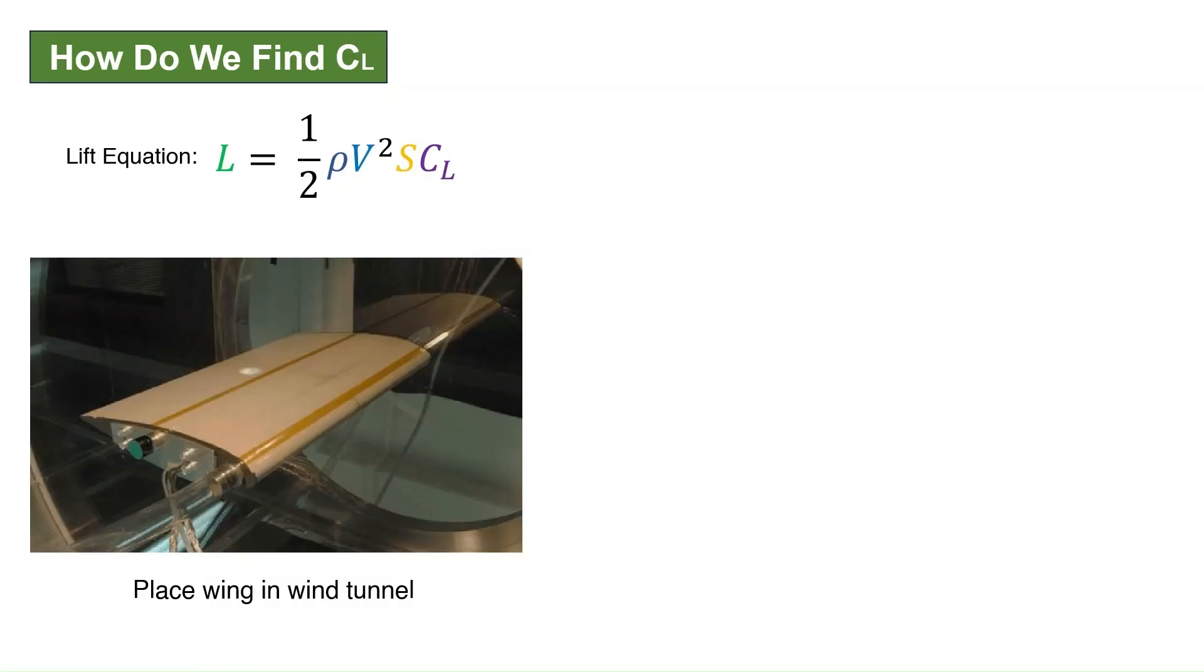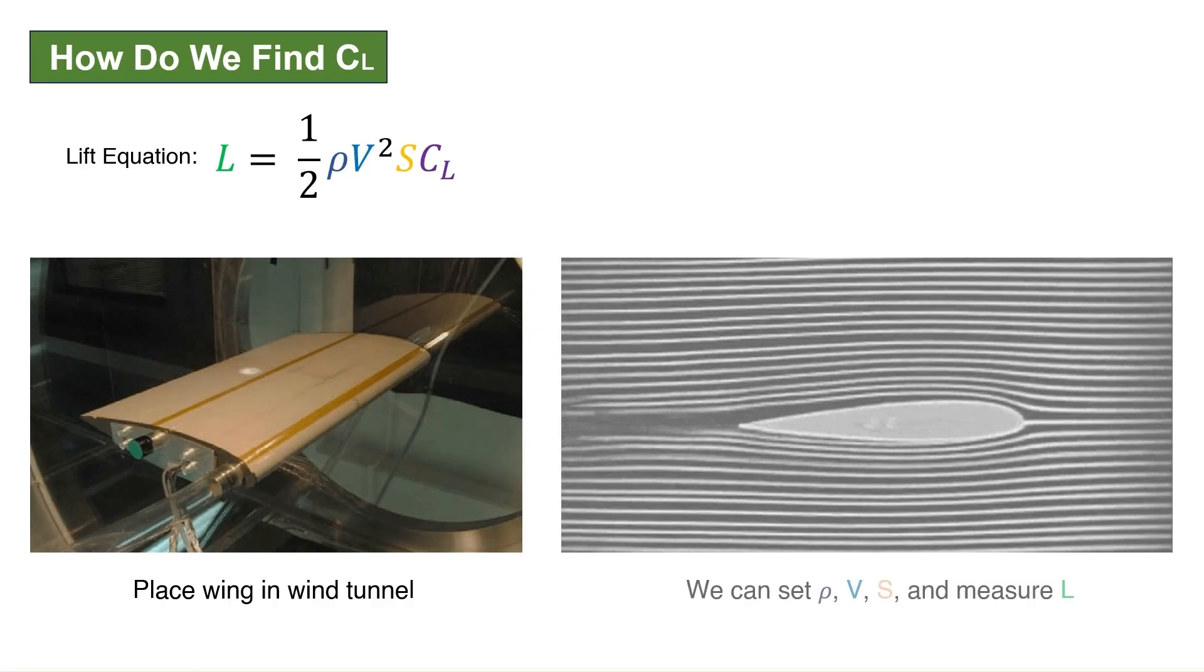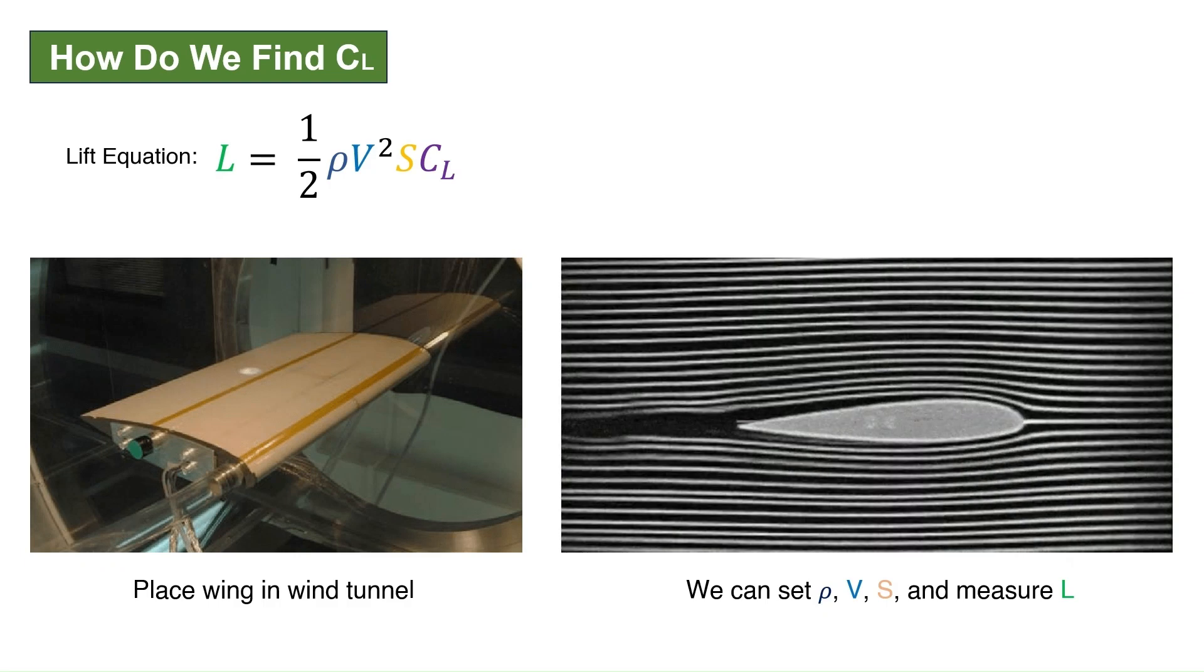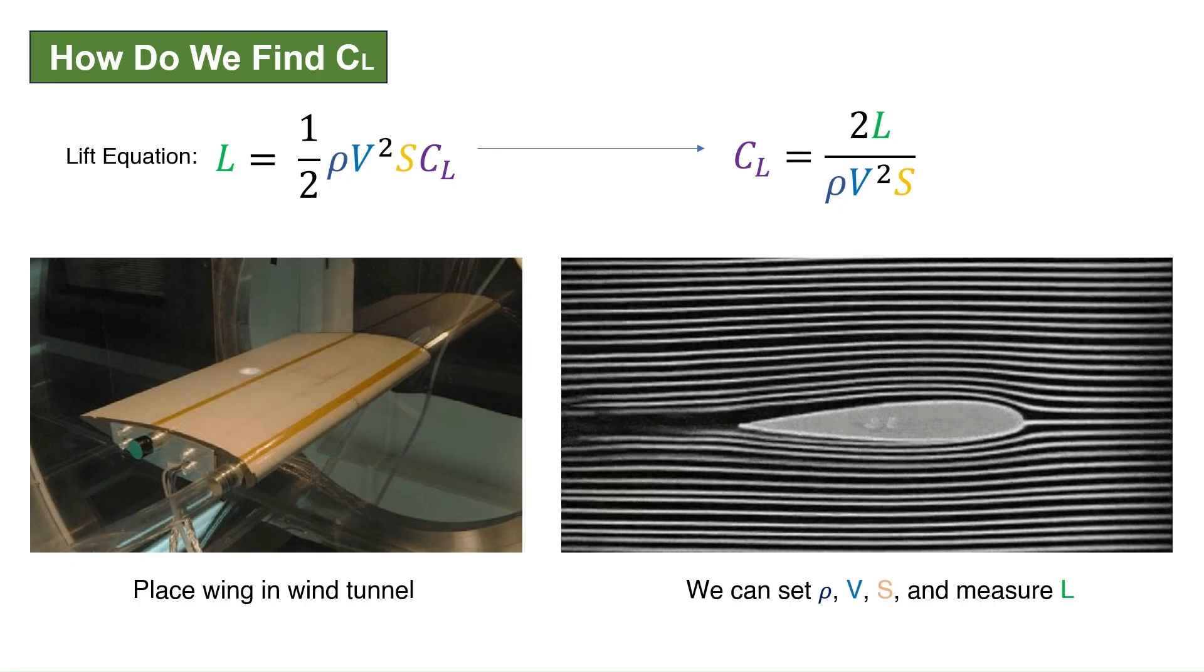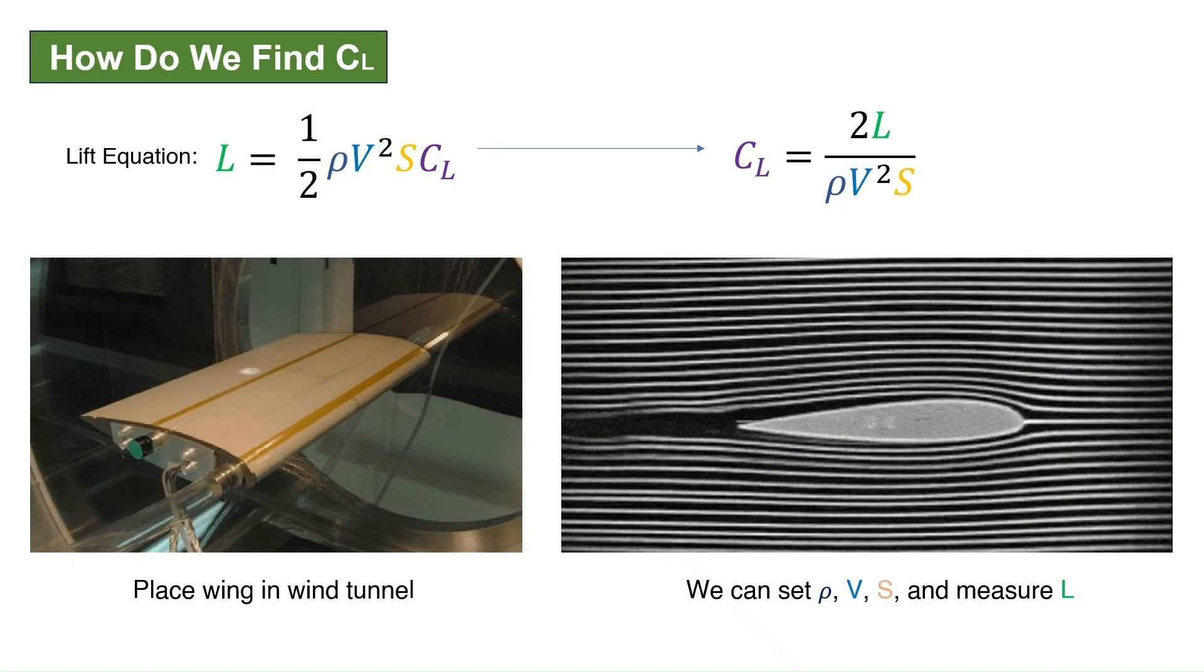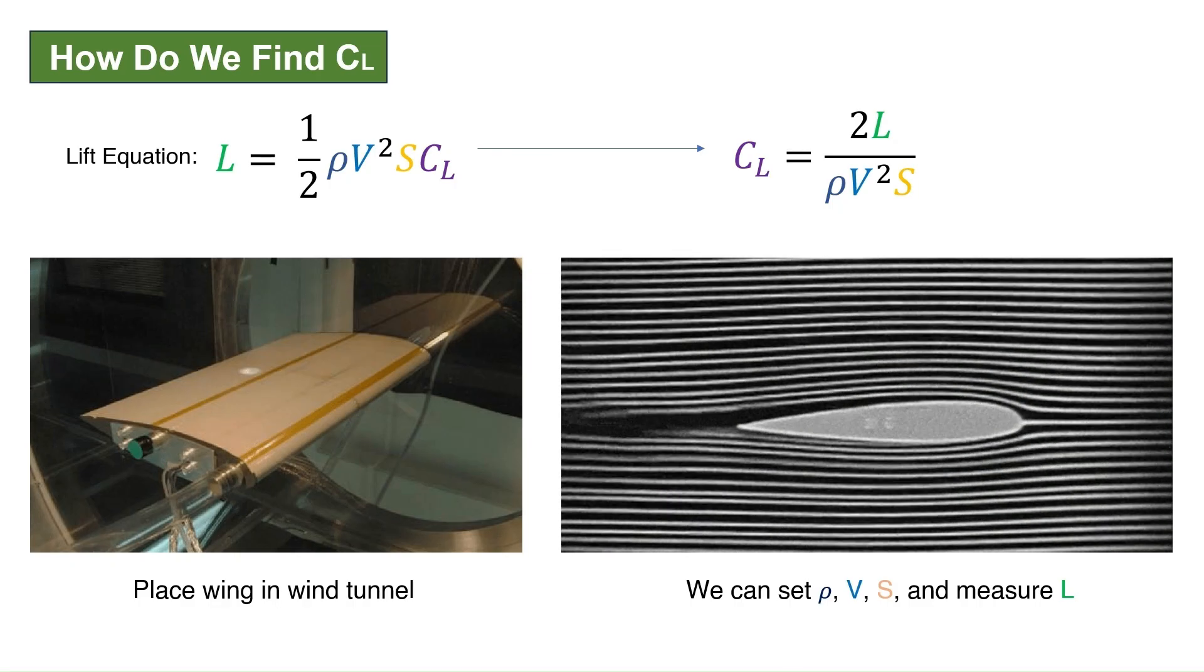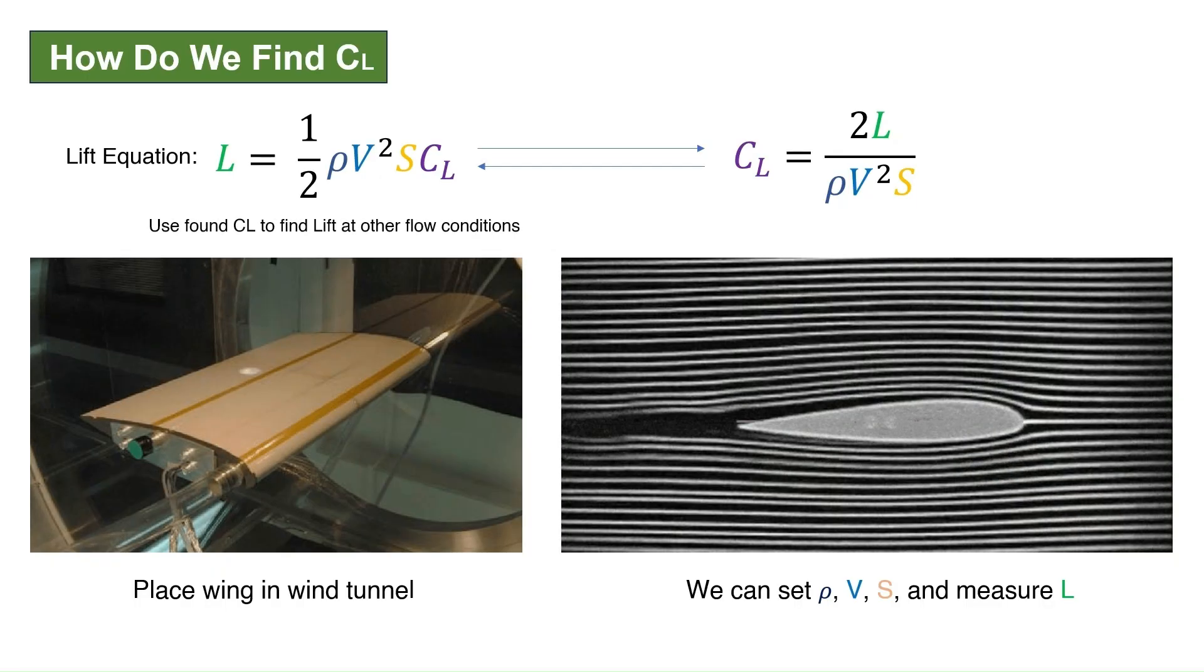Here is a way to determine a value for the lift coefficient. In a wind tunnel, we can set the velocity, density, and wing area and measure the lift produced. Through division, we arrive at a value for the lift coefficient. We can then predict the lift that will be produced under a different set of velocity, density, and area conditions using the lift equation.